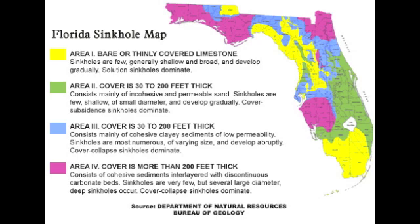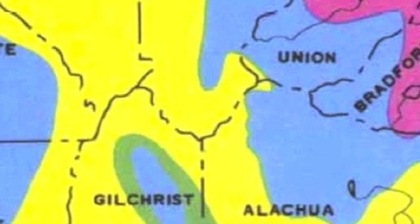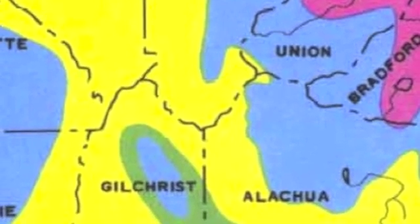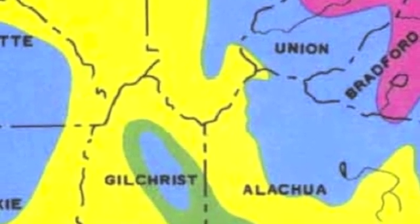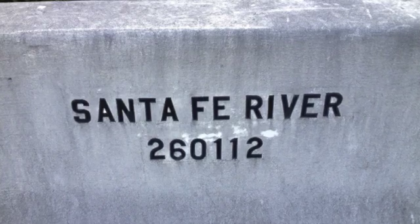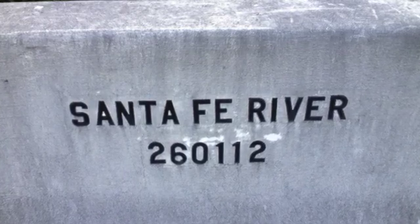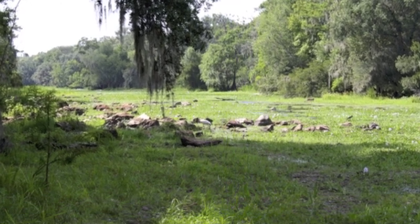Sinkholes in Florida can be categorized by different types, and some of them that form are shallow and broad, which develop gradually, to those that are large in diameter, very deep, and develop abruptly. In Florida, the most common natural sources of stress that trigger sinkholes are the fluctuations of water levels.